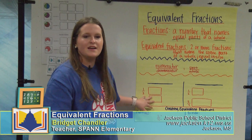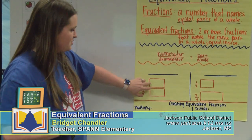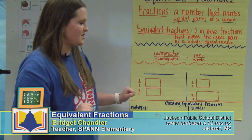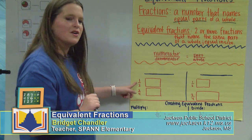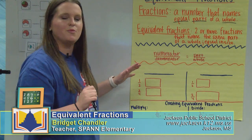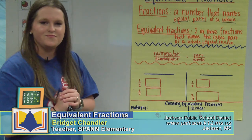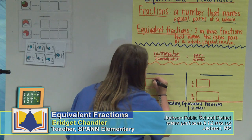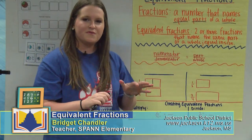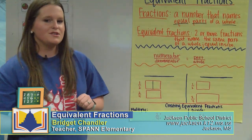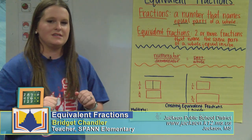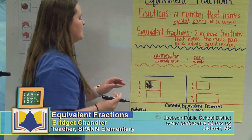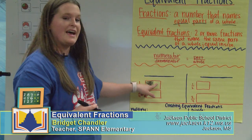We have a quick example to do together. We have two rectangles — the top one we're going to show one-half and the bottom one two-fourths. For one-half, we look at the denominator to decide how many equal pieces to divide the rectangle into. The denominator is two, so I divide my shape into two equal pieces. Then the numerator tells me how many pieces to shade — my numerator is one, so I shade in one piece.